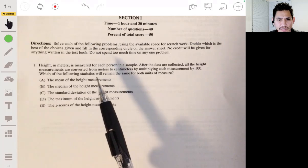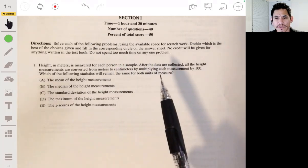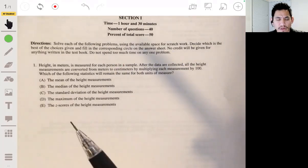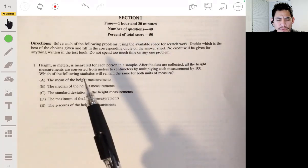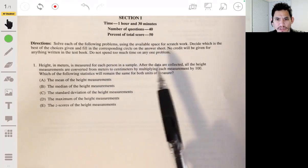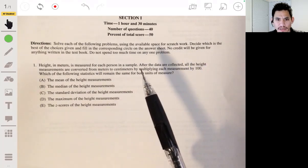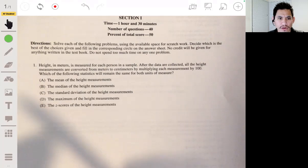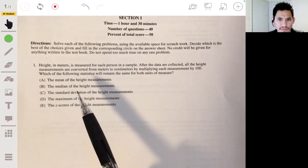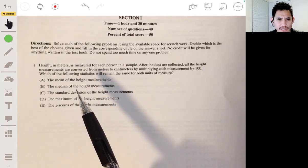Which of the following statistics will remain the same for both units of measure? Okay, so the mean will not remain the same because you're multiplying by 100, so the mean will change by a factor of 100. The median will also be multiplied by 100, so it won't stay the same.